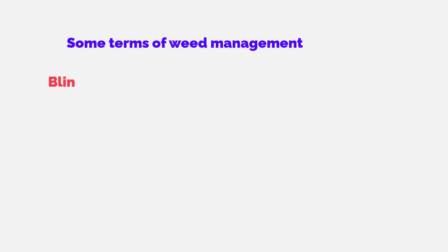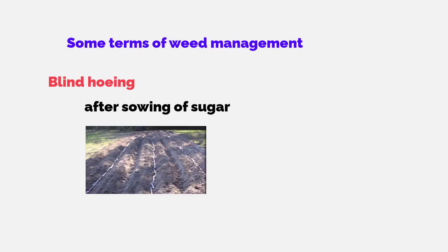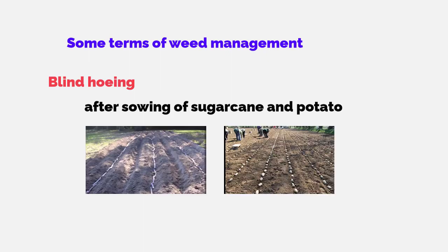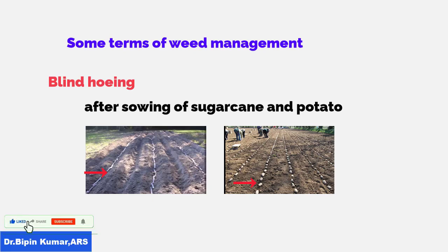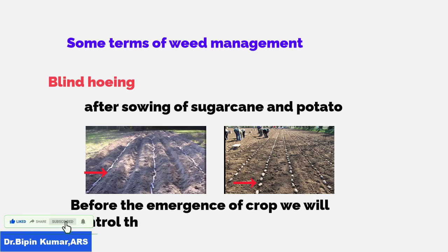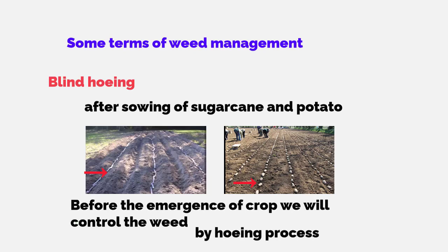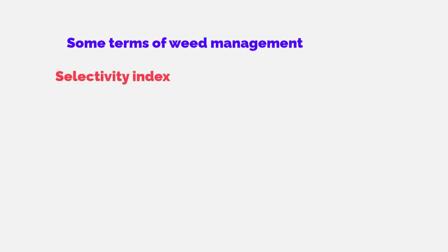Blind hoeing is done after sowing sugarcane and potato, where tubers or stems are inserted into the soil and take time to emerge. Before the crop emerges, weeds are controlled by the hoeing process. This is called blind hoeing and is commonly practiced in sugarcane and potato crops.